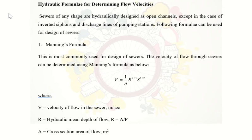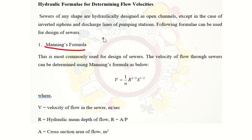In the main part of sewer design, we need to determine the flow velocity. Different hydraulic formulas are used. The first one is Manning's formula. Velocity V is equal to 1/n multiplied by R raised to 2/3 multiplied by S raised to 1/2, where n is Manning's roughness coefficient, R is hydraulic radius, and S is slope.